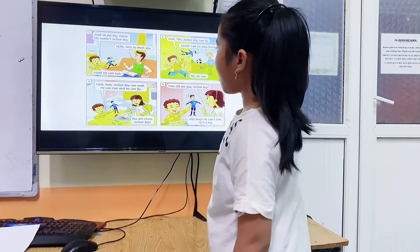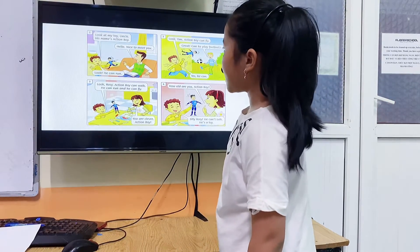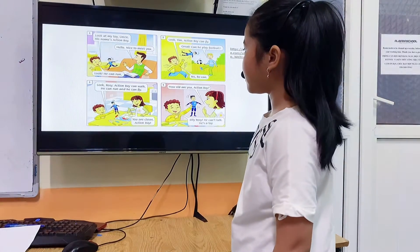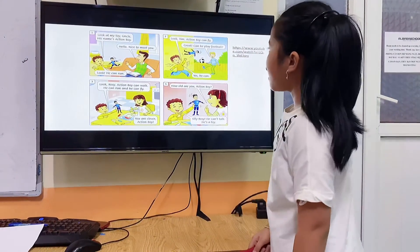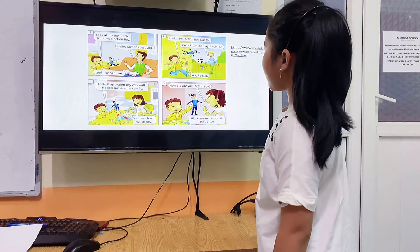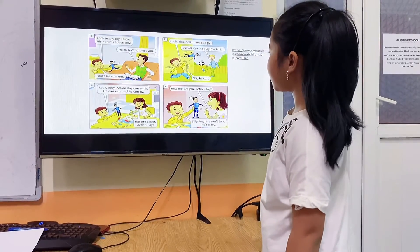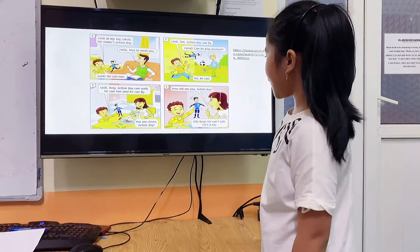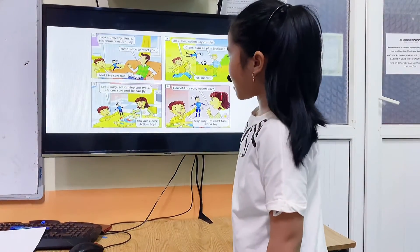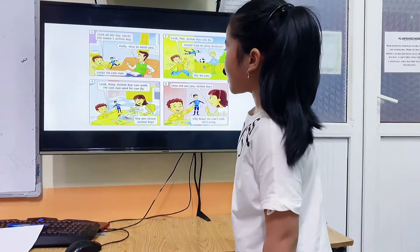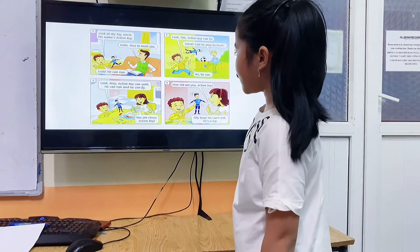Look at my toy uncle. His name is Action Boy. Hello. Nice to meet you. Look, he can run. Look, Tim, Action Boy can fly. Great. Can he simply put ball? Yes, he can. Look, Rosie, Action Boy can walk. He can run and he can fly.